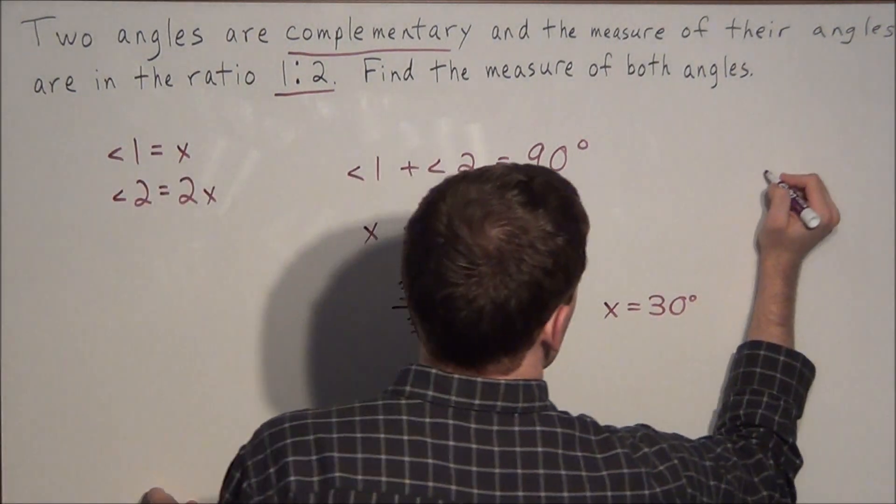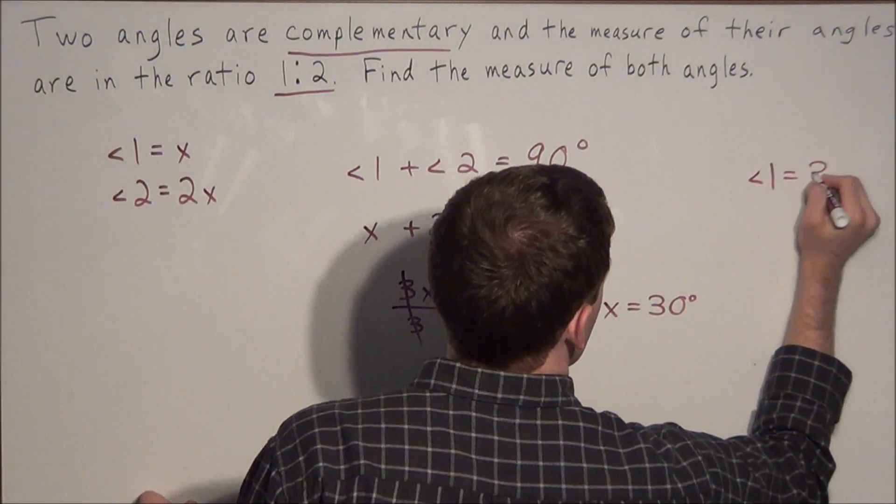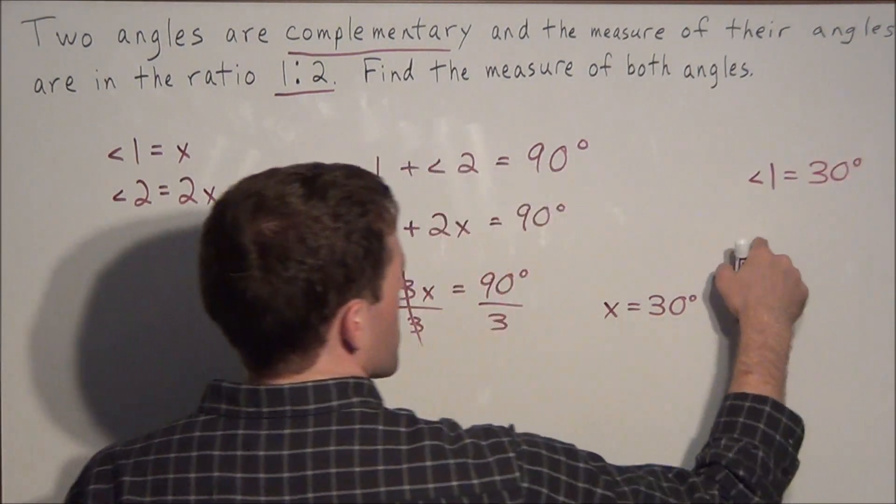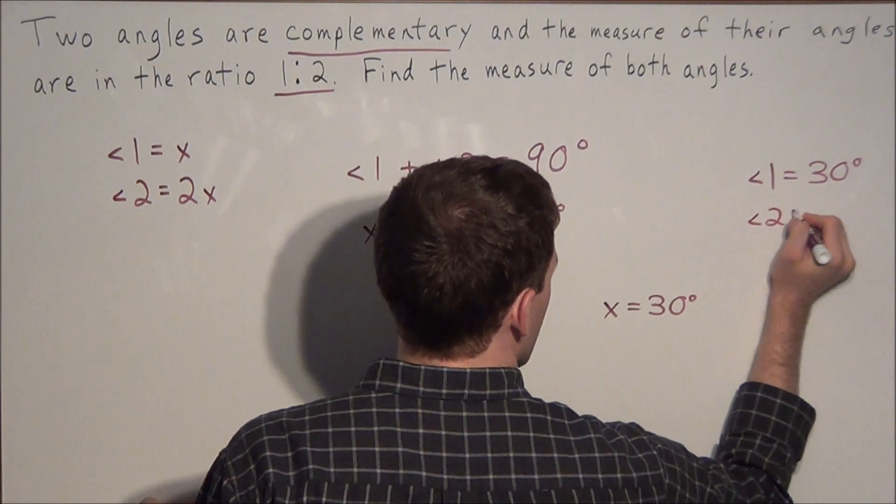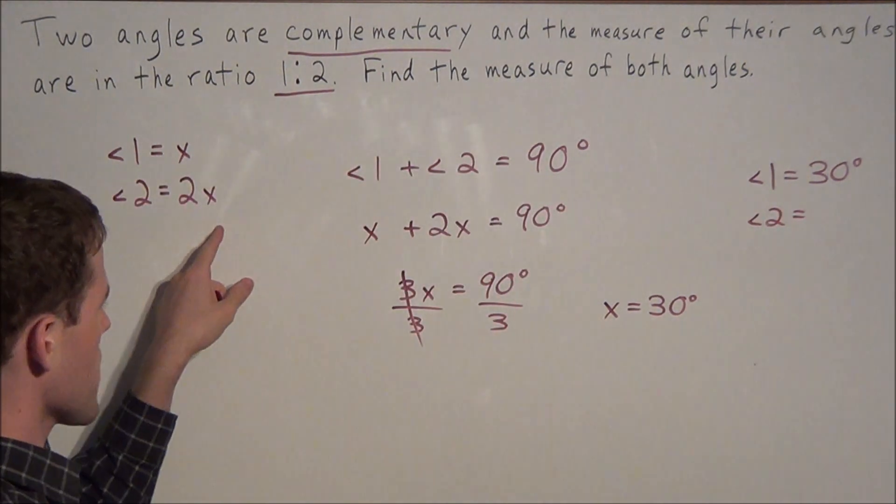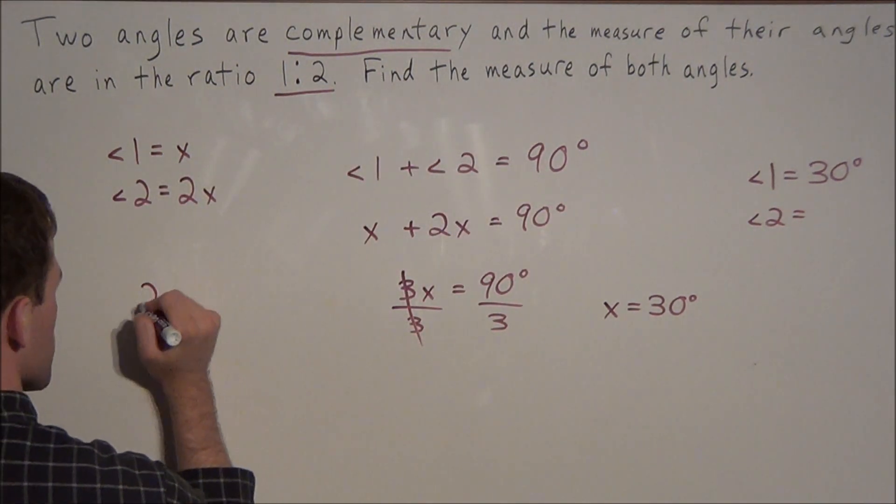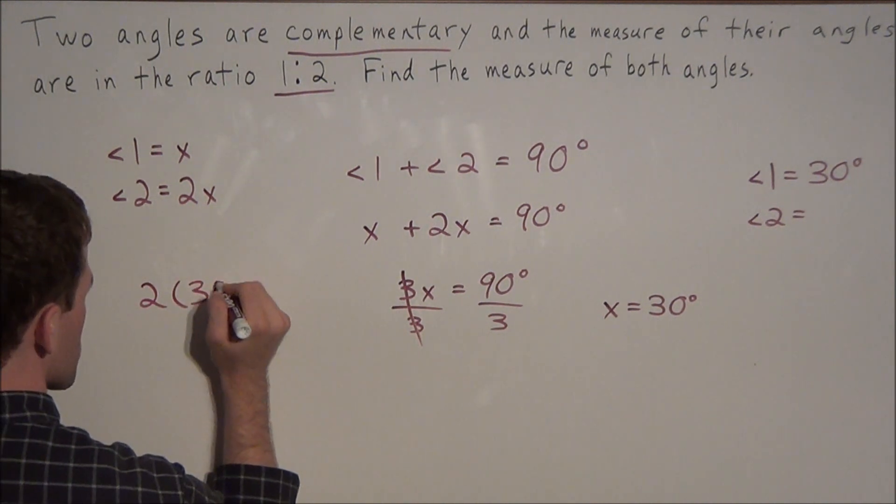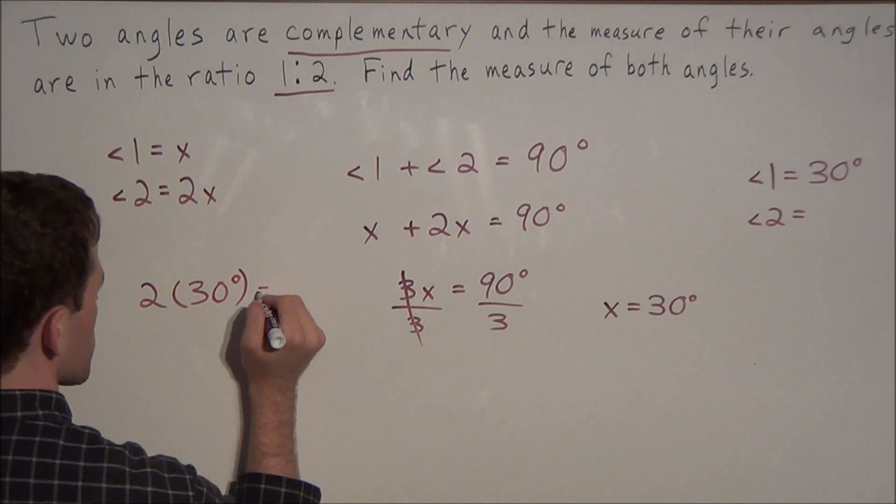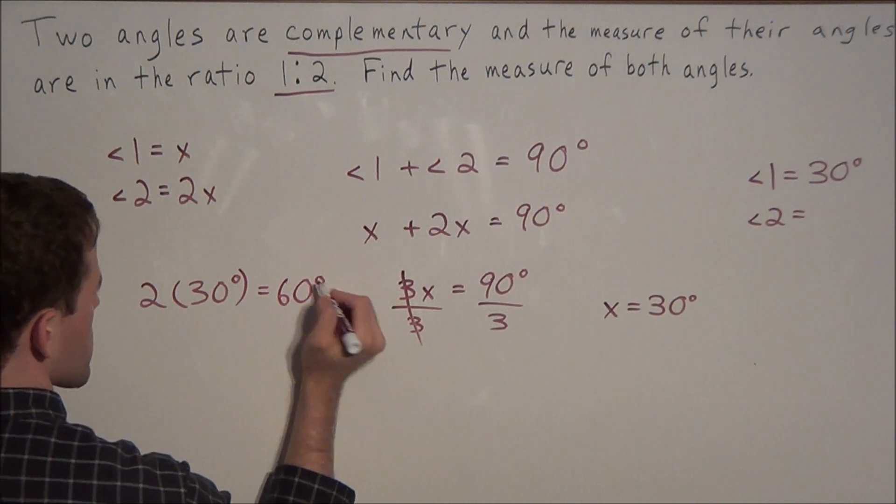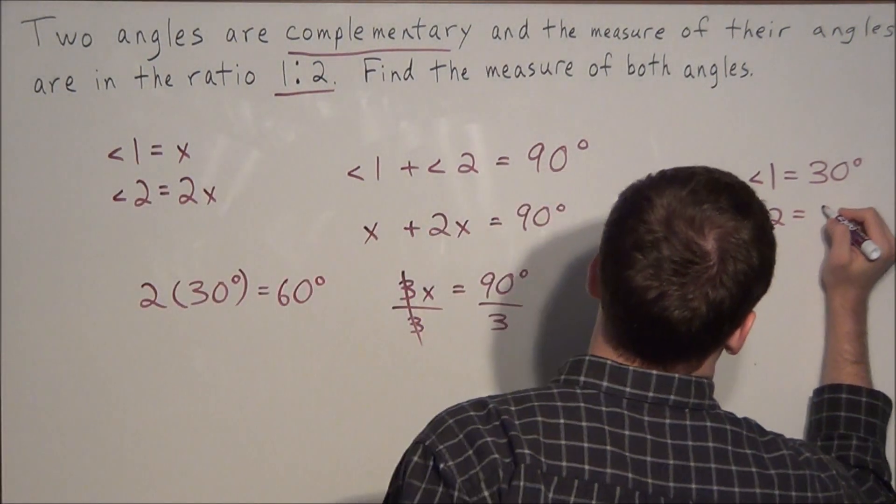So the measure of angle 1 is 30 degrees. The measure of angle 2 is 2 times x. But we just found x to be 30 degrees, so we have 2 times 30 degrees, which gives us 60 degrees. So the measure of angle 2 is 60 degrees.